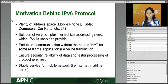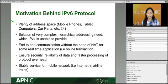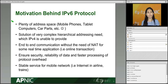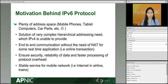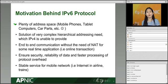So what are the motivations behind IPv6? Why do we need it? The very first reason is address space. The IPv6 protocol provides plenty of addresses for many different devices. A quick calculation: how many IPv4 addresses are there? About 4.3 billion. Now imagine every person on the globe had their own IPv4 address — IPv4 would not be sufficient because we are more than 7 billion in population.